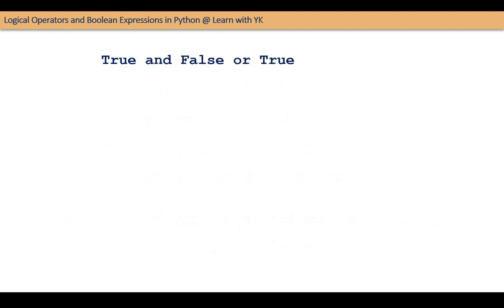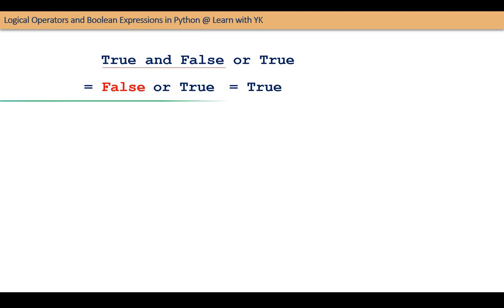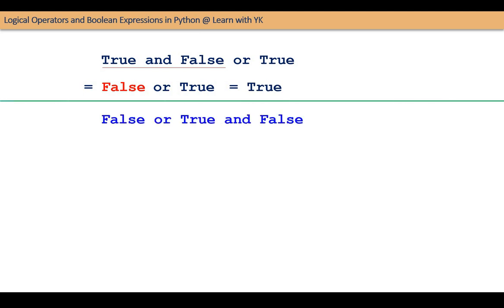Let us take this expression as the first example. True AND false will be evaluated first. True AND false is false. Therefore, the expression becomes false OR true, which finally evaluates to true.